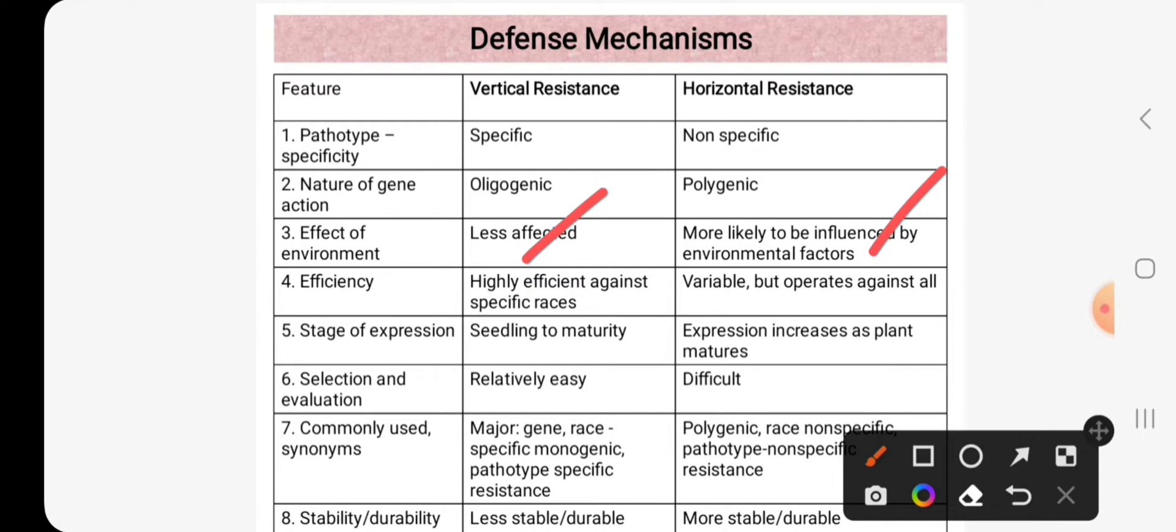Vertical resistance is highly efficient against specific race. Horizontal resistance is variable, it is not very efficient against specific race, but it operates against all the races of a particular pathogen.